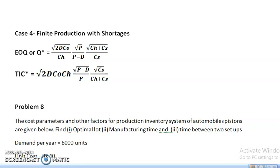In this model, we combine the equation of the third and second model. The equation for Q optimal is equal to square root of 2dCO divided by CH into square root of P divided by P minus D into square root of CH plus CS divided by CS.